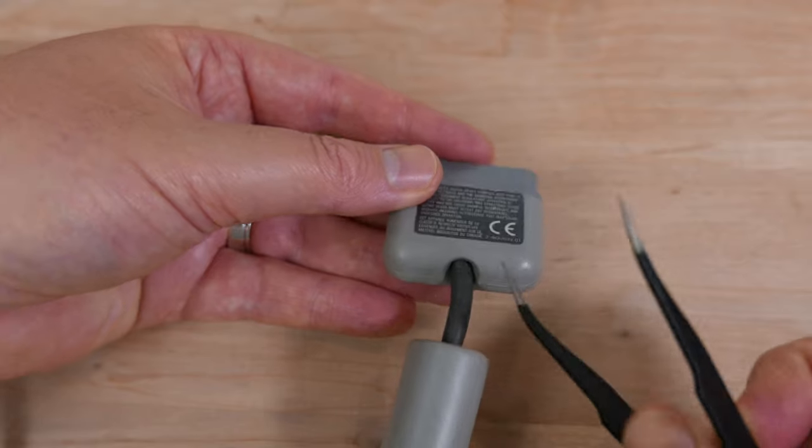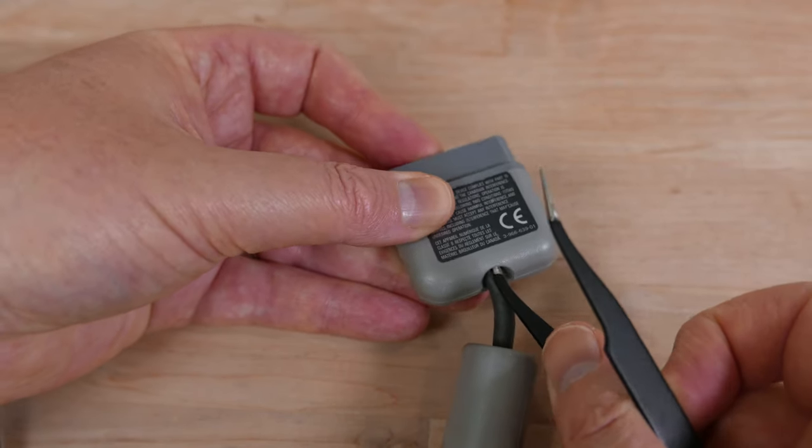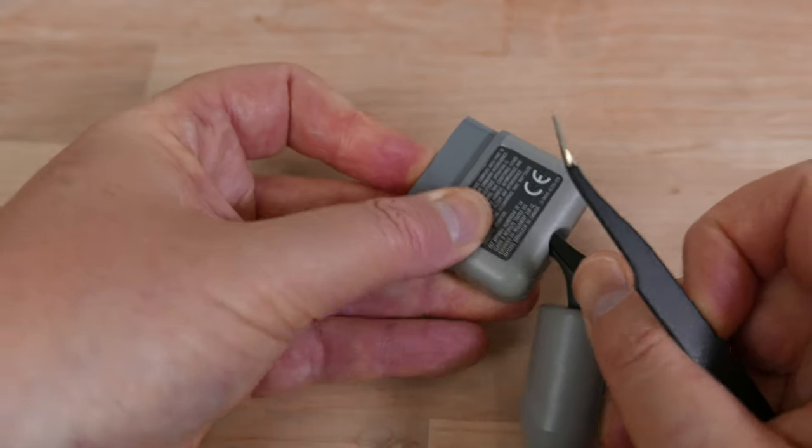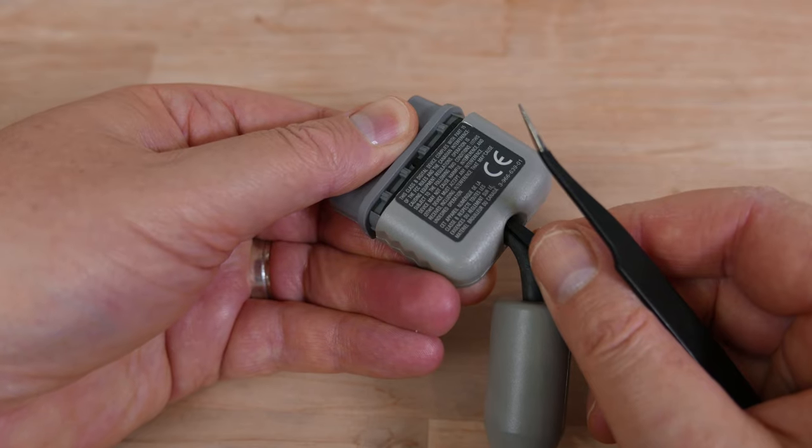So one more time: insert one leg of the tweezers into the hole, rotate it so that the tip of the leg is touching the inside of the case, and push down on the connector while maintaining upwards pressure on the tweezers.